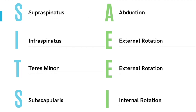Another important function is adduction. Teres minor and subscapularis are the muscles responsible for adduction. So let's say it together: remember the rotator cuff muscles with SITS — S supraspinatus, I infraspinatus, T teres minor, S subscapularis — and their functions with A-E-E-I: abduction performed by supraspinatus, infraspinatus does external or lateral rotation, teres minor does external rotation as well and adduction, while subscapularis does internal or medial rotation and adduction.